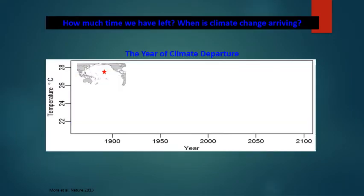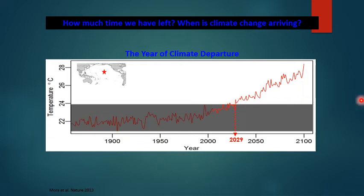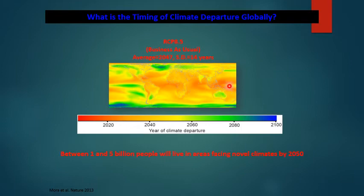How much time do we have? When is climate change arriving? There are lots of different predictions about temperature rising and its many issues. Some papers predict as early as 2029 for a year of climate departure — that doesn't mean the world's coming to an end, but that's when the climate will completely change and it won't be reversible. Some models predict further out, but a lot of them are within the next 20 years. Climate departure is happening a lot quicker in places like the Arctic.